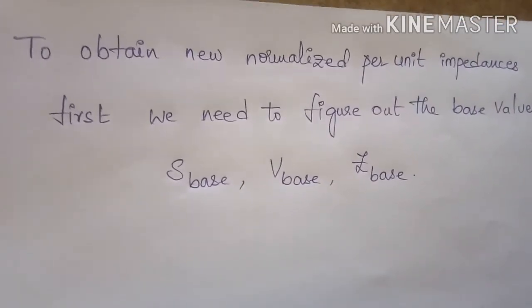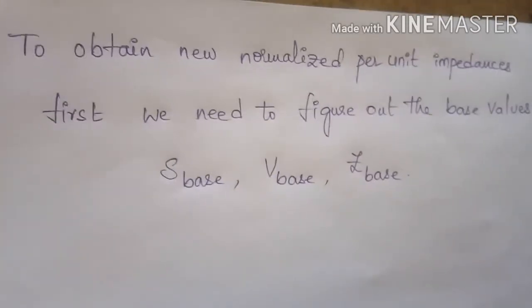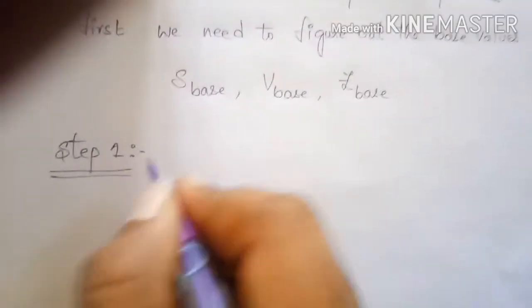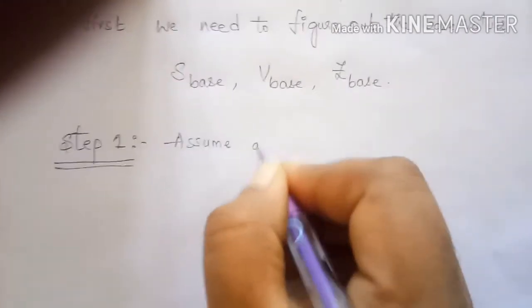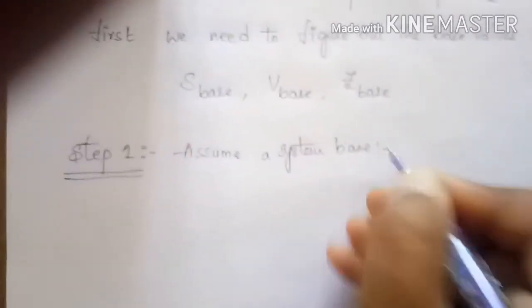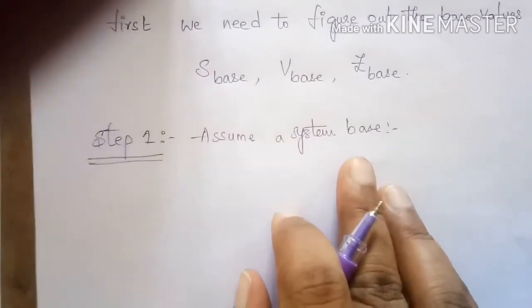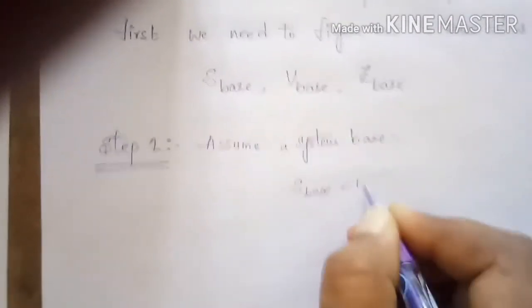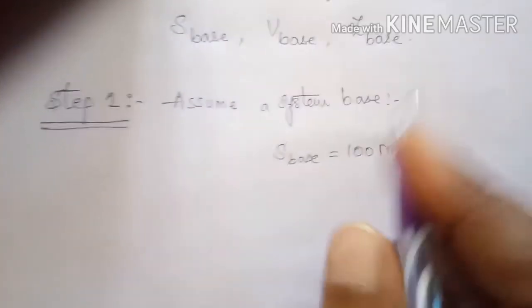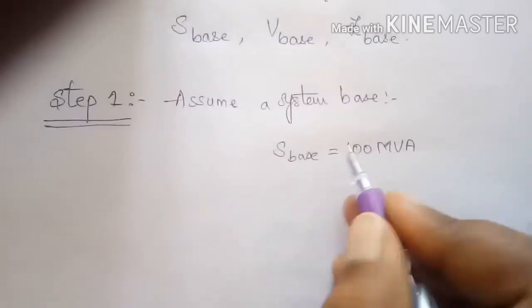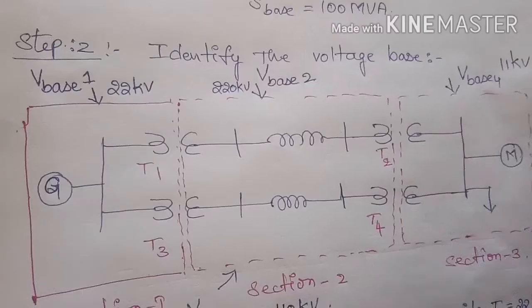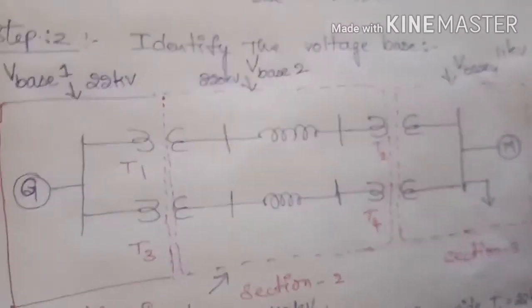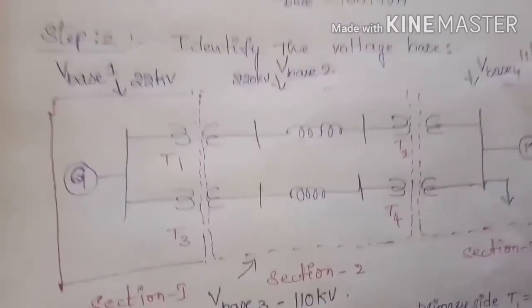To obtain new normalized per unit impedance values, we first determine the base values: S base, V base, and Z base. The first step is to assume a system base. The system-wide S base is taken as 100 MVA. This is a random assumption chosen to make calculations easy.